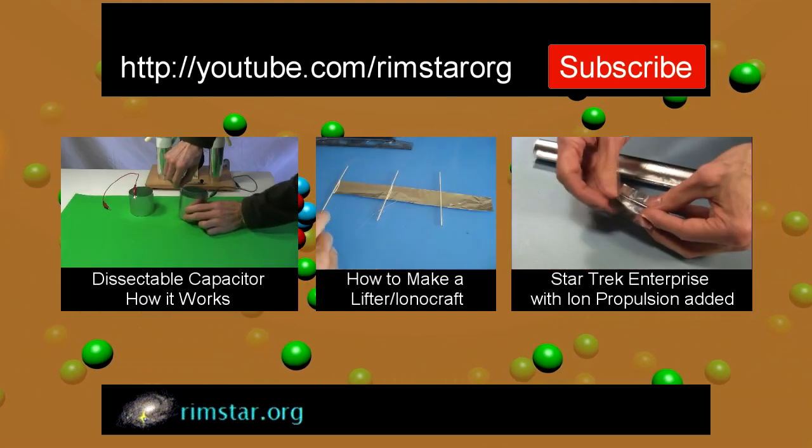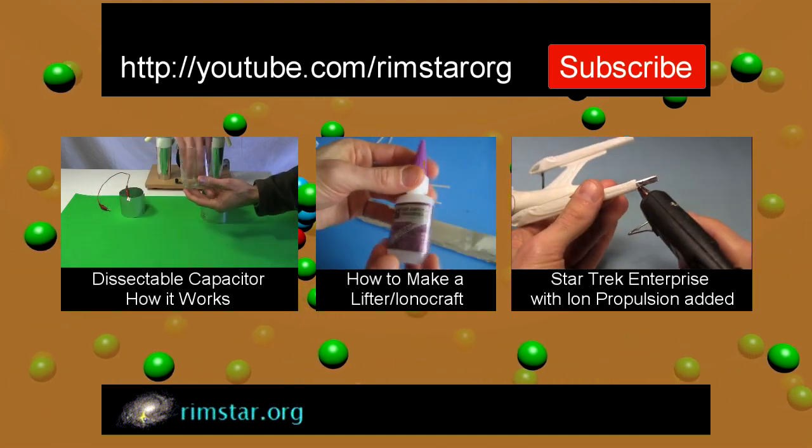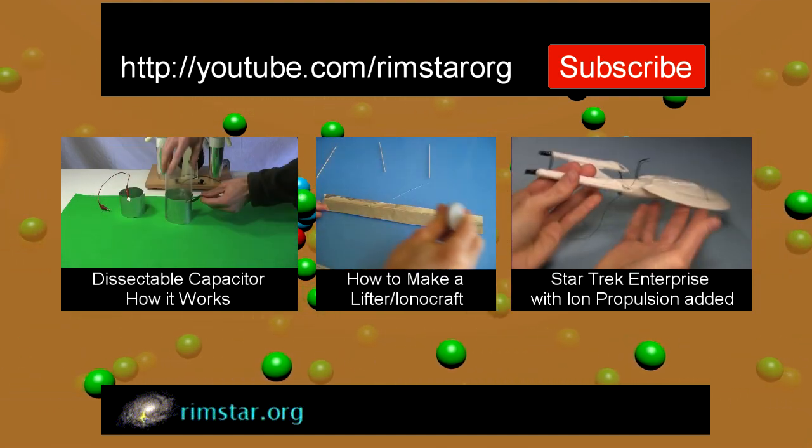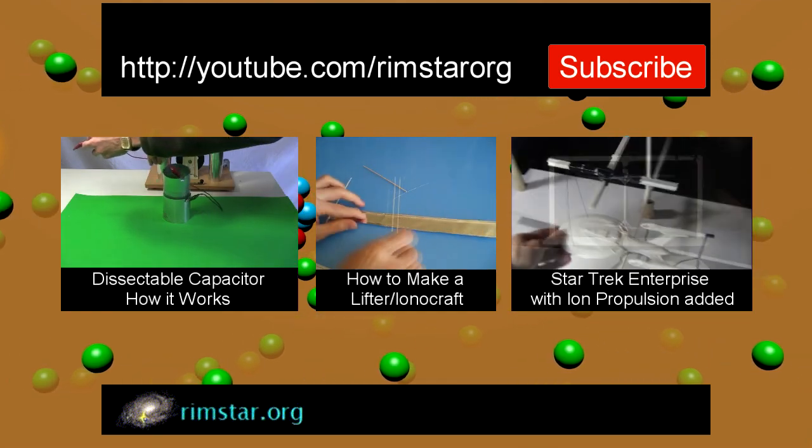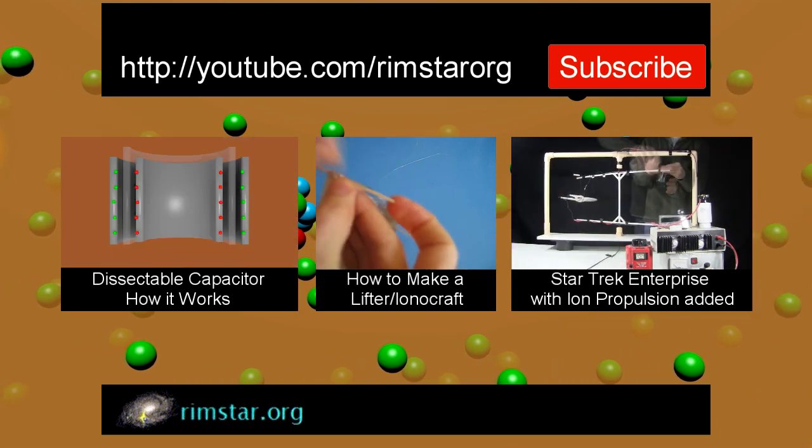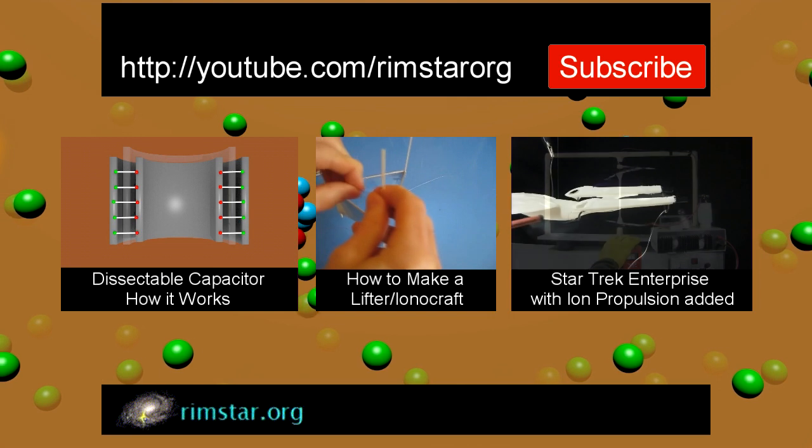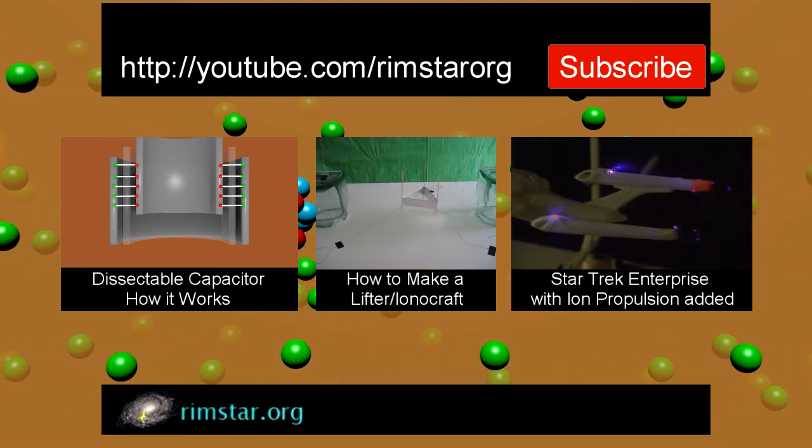That includes one about a dissectable capacitor, something that Benjamin Franklin had experimented with. Another about how to make the lifter I showed when talking about corona. And one showing the Star Trek Enterprise model I talked about, this time being propelled using Ion Wind. And don't forget to subscribe if you like these videos, or give a thumbs up or leave a question or comment below.